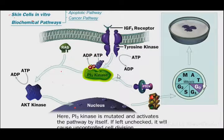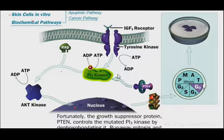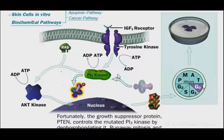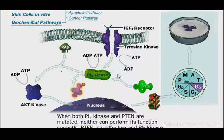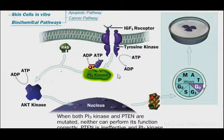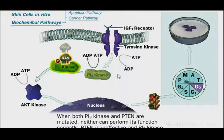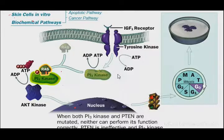A mutation means that PI3 kinase is activated or phosphorylated regardless. PTEN normally controls the mutations by dephosphorylating PI3 kinase, averting runaway mitosis and cancer. But if both PI3 kinase and PTEN have mutations, then the cell cycle will run uncontrolled, meaning PI3 kinase remains active and cell division becomes uncontrolled.